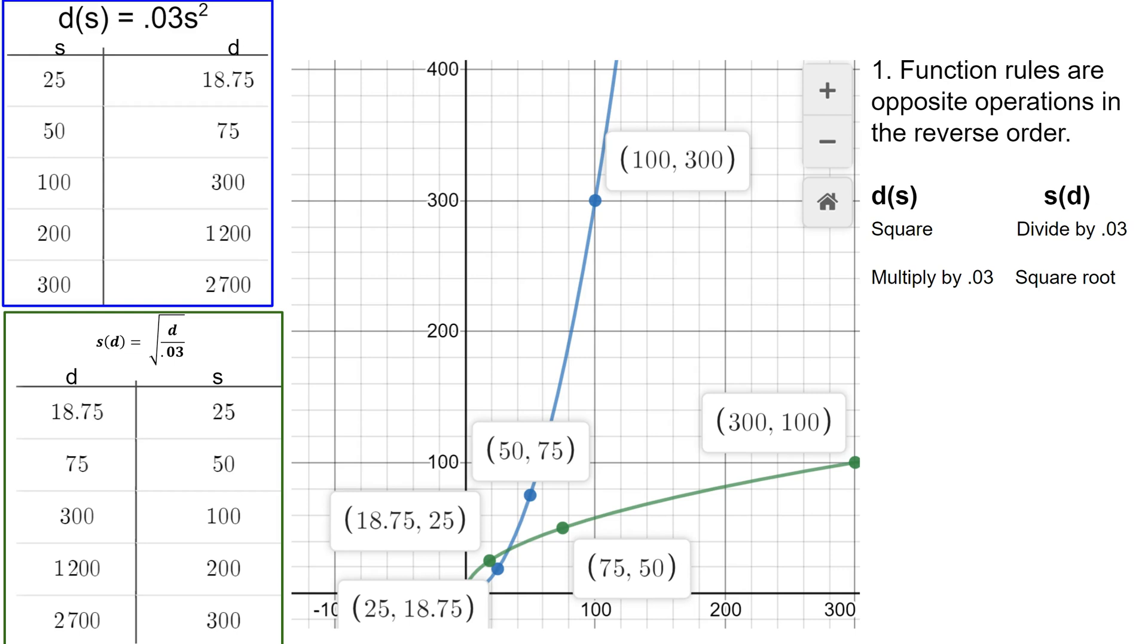So the last thing that was done in d of s was multiplied by 0.03. The first thing that's done in s of d is the opposite of that, to divide by 0.03. So we're doing the opposite operation and the last thing is now the first thing. The square becomes inverted as a square root. So you can see we have opposite operations in the reverse order. Instead of squaring and multiplying by 0.03, I'm dividing by 0.03 and then square rooting it.